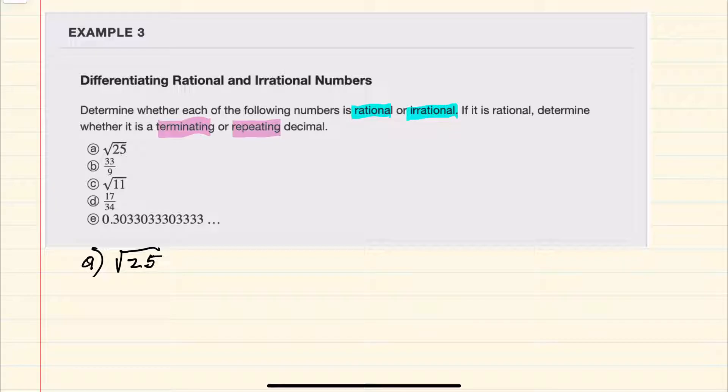Our first example, a, being the square root of 25. While square roots that do not simplify are irrational, the square root of 25 is something that simplifies. Since 25 is a perfect square, the square root of 25 can just be written as 5. 5 is rational and terminating.